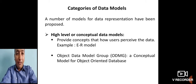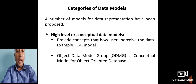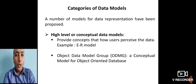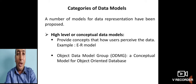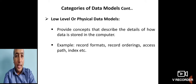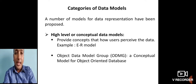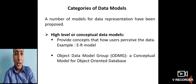Data models can be categorized into three types. First is the high-level or conceptual data model. Second is the low-level or physical data model. Third is the representational data model.